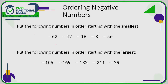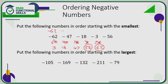With negative numbers, first put them in order as if they were positive numbers. Looking at these as 67, 47, 18, 3, 56: the smallest is 3, next is 18, then 47, then 56, then 62. So from smallest to largest as positive numbers: 3, 18, 47, 56, 62. For negative numbers it's the opposite — the smallest is minus 62, then minus 56, minus 47, minus 18, then minus 3.